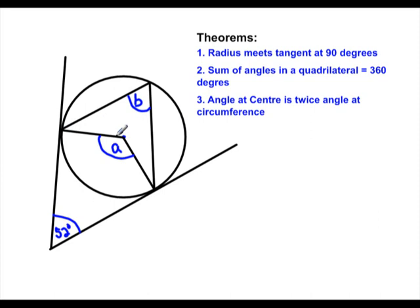Well, we know that a tangent meets—this is tangent—meets a radius at 90 degrees. So that means this angle right here is 90 degrees. And this angle also right here is 90 degrees. A tangent meeting a radius at 90 degrees.